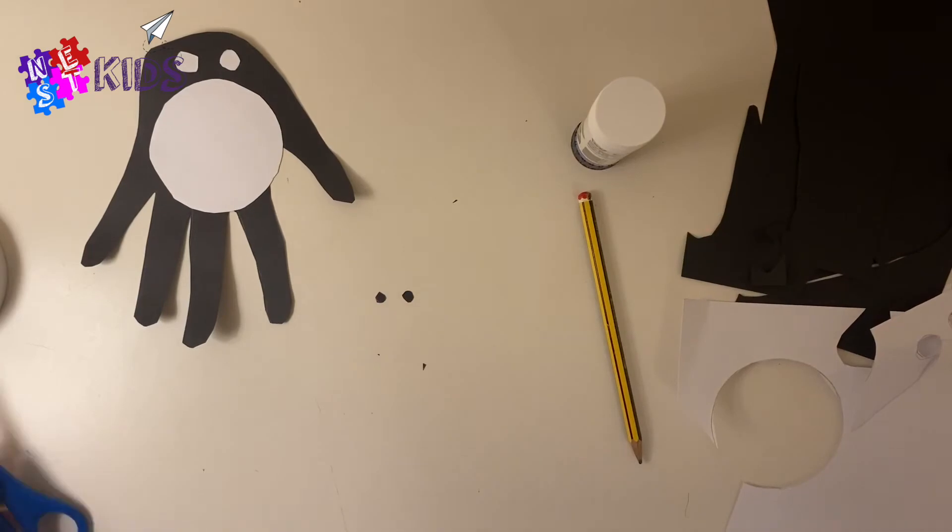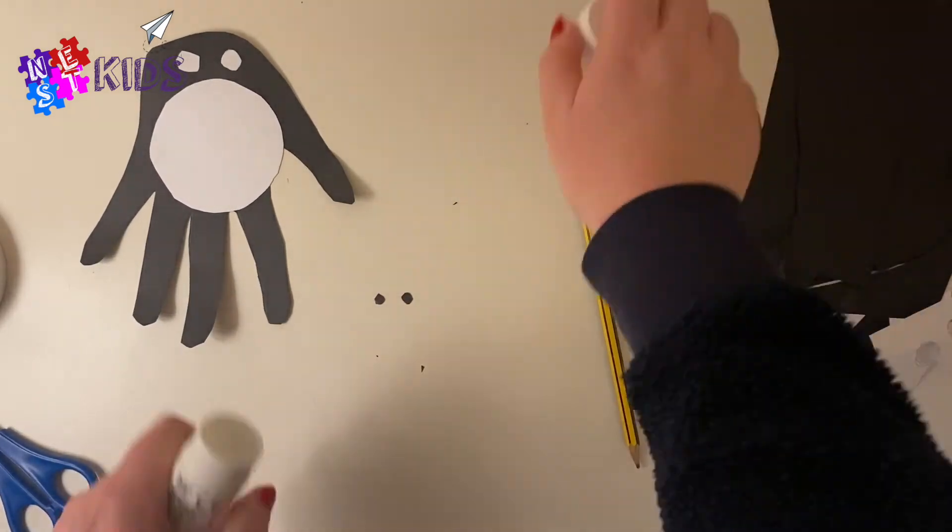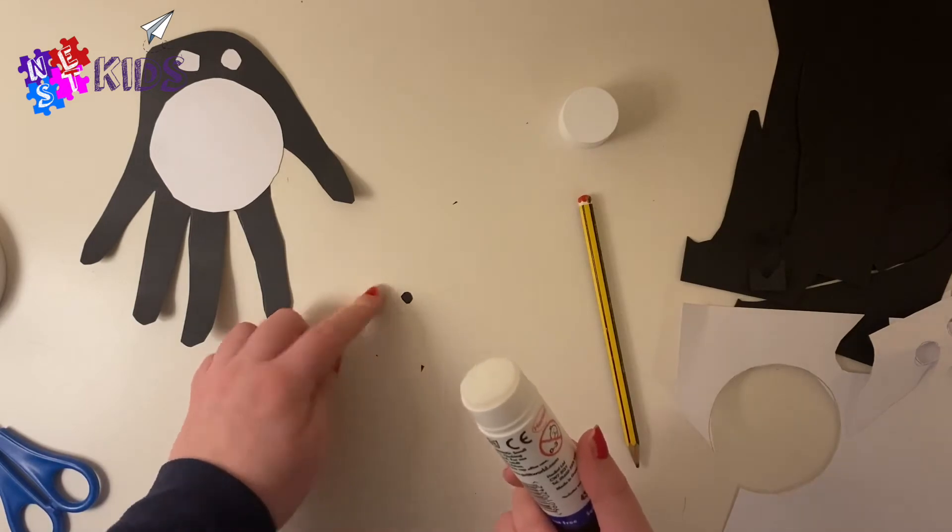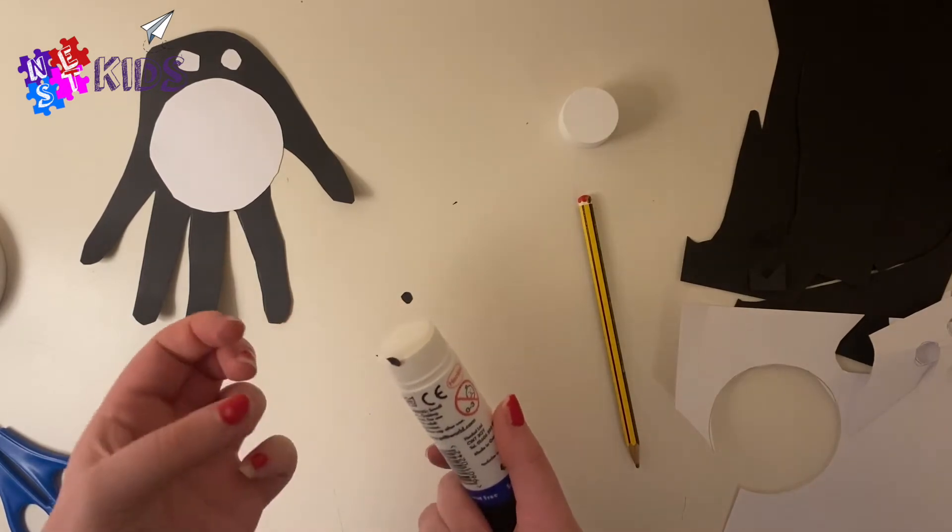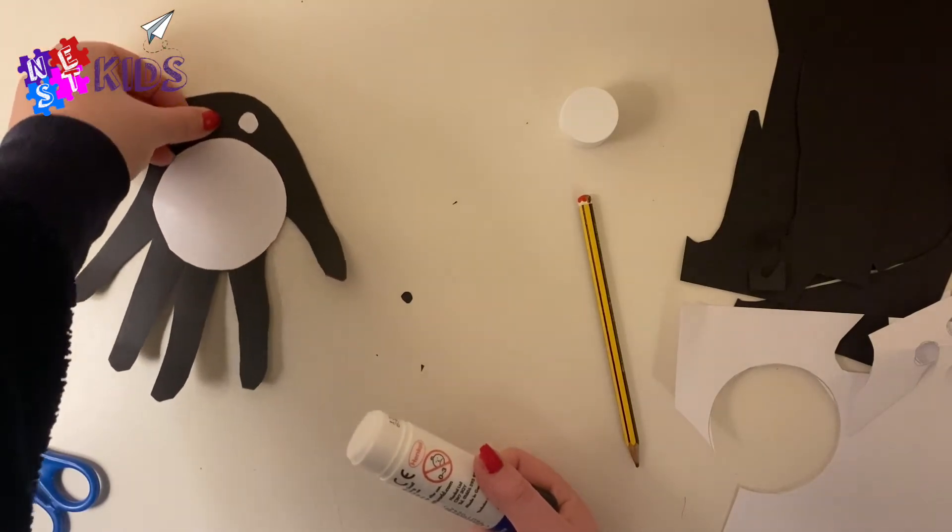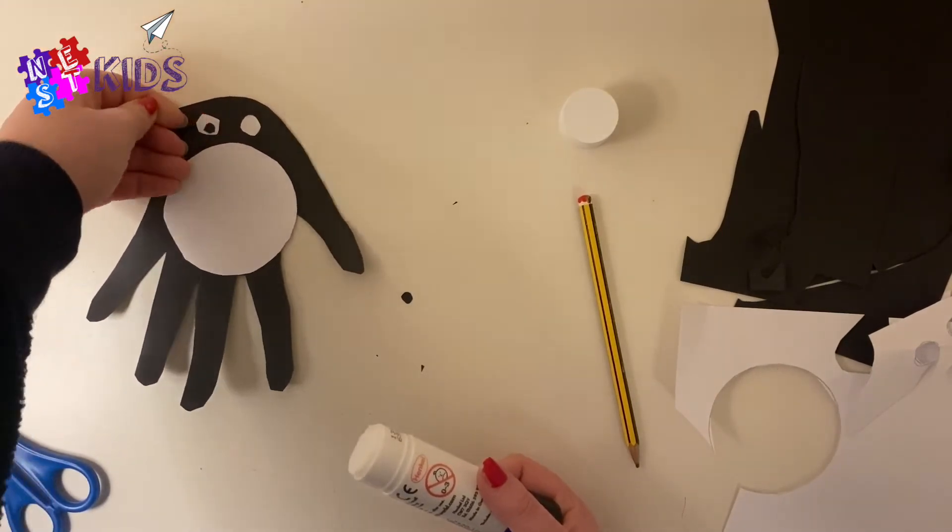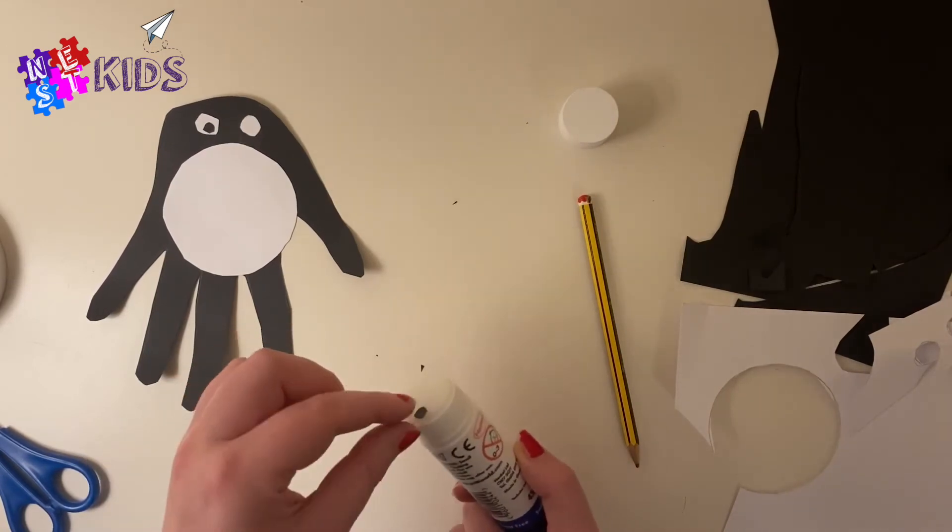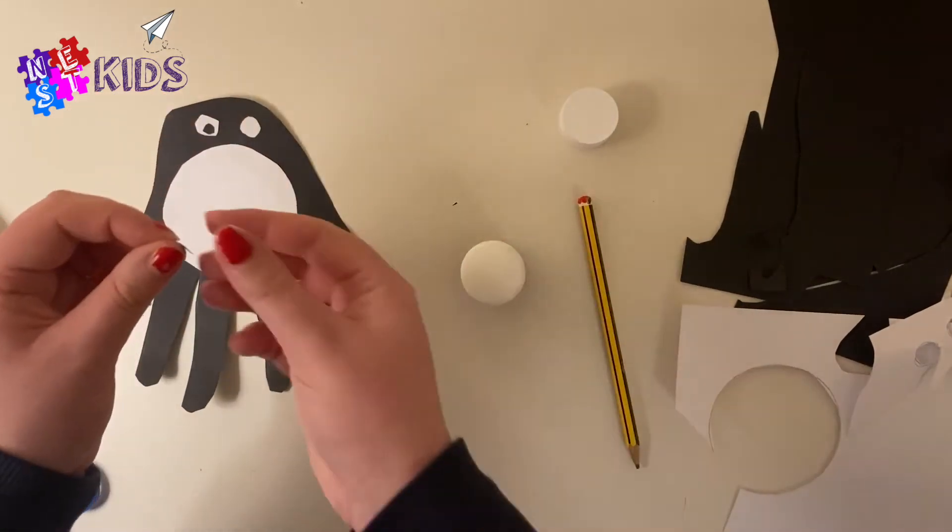Cut them out, and then you're gonna get your glue again or whatever you're using to stick things down with, and stick them on that penguin that we've got already so hopefully it looks a bit more realistic, a bit more alive.